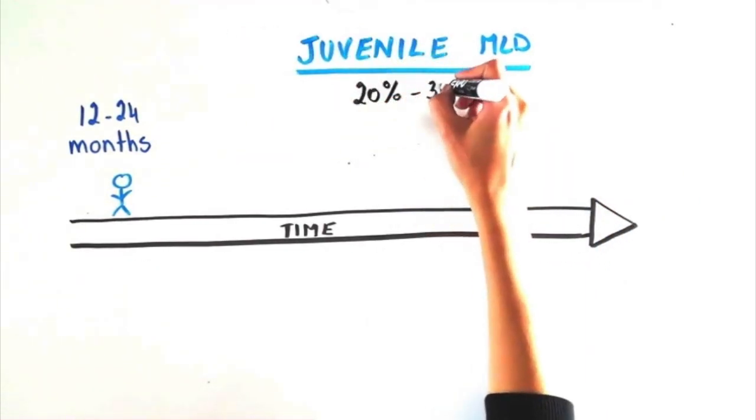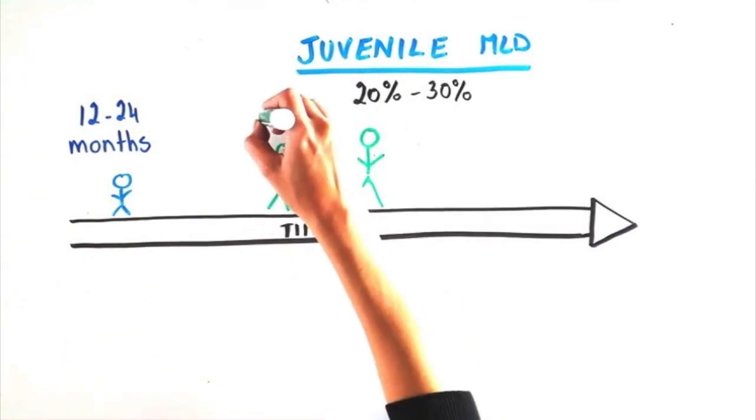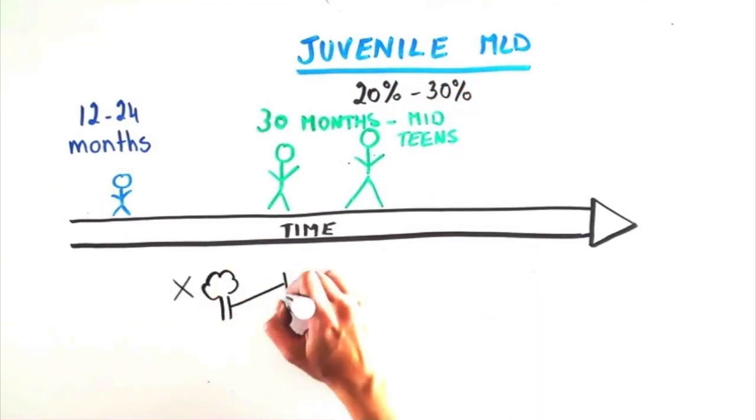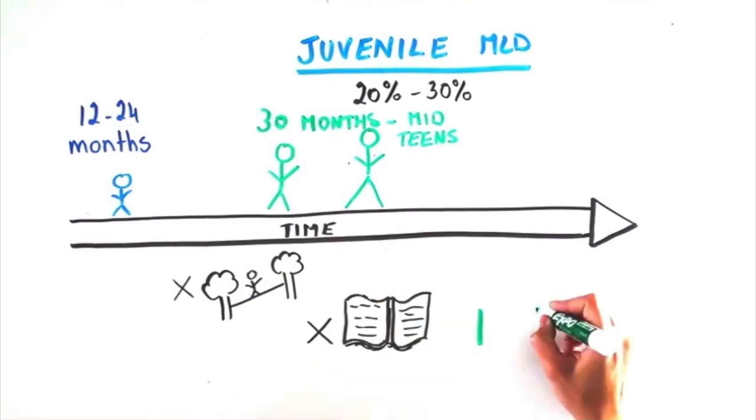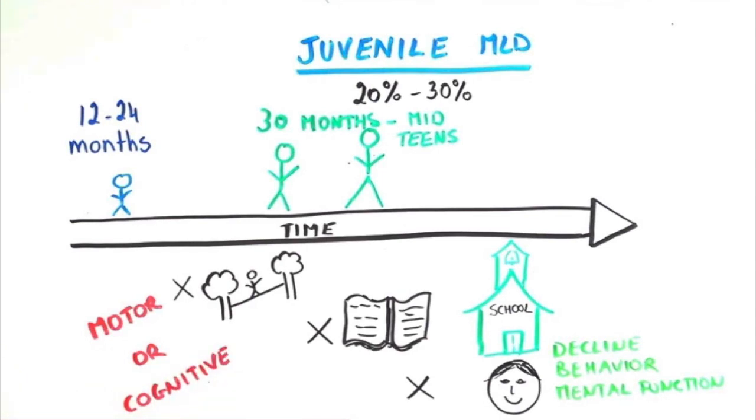Juvenile MLD occurs in 20-30% of cases, with onset of symptoms between 30 months and the mid-teens. These children often show a decline in balance or walking, clumsiness or a decline in school performance, changes in behavior or mental functioning. Although the progression of juvenile MLD is slower than late infantile MLD, it is still very severe.